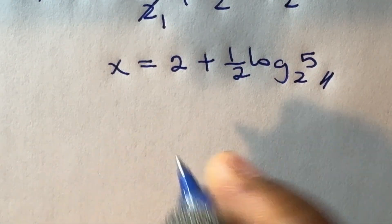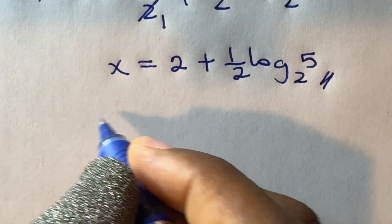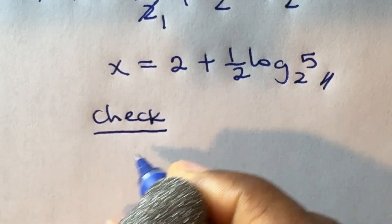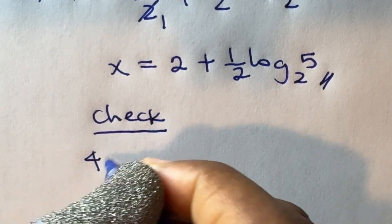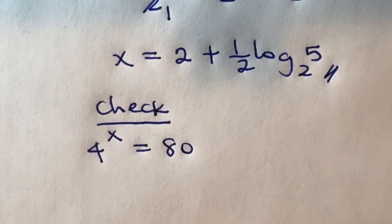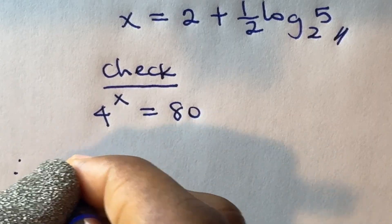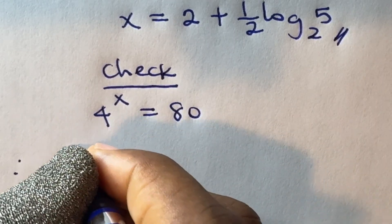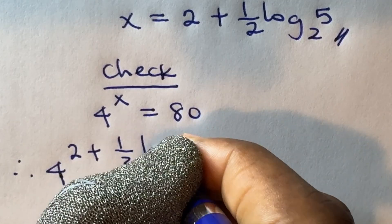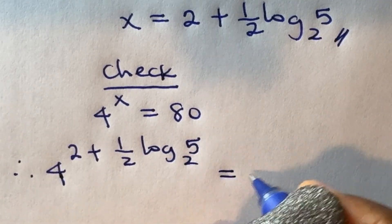Now we need to verify that this is correct. I will substitute this into the original equation. The original equation was 4 raised to power x is equal to 80. Therefore, 4 raised to power (2 + 1/2 · log₂5) should give us 80.